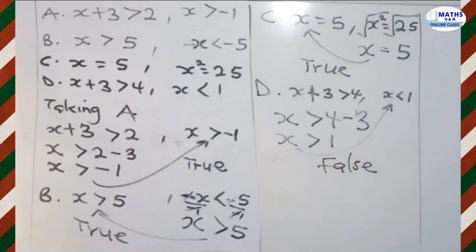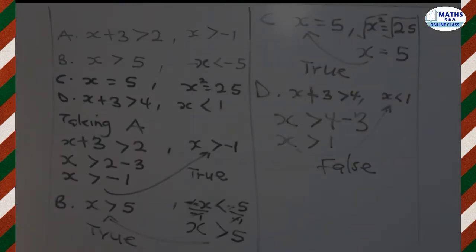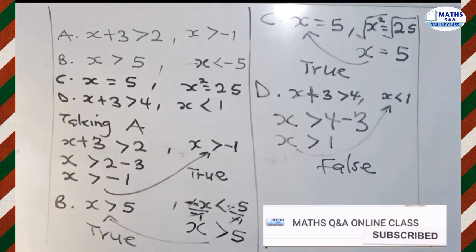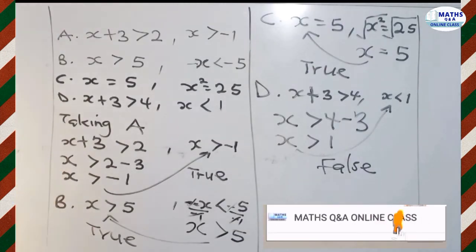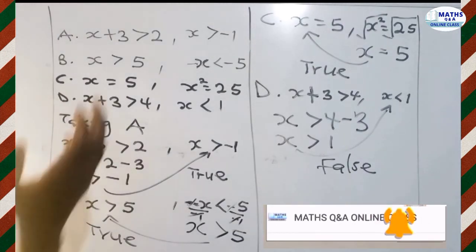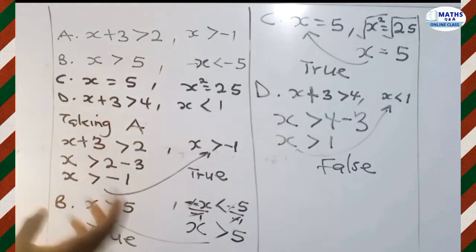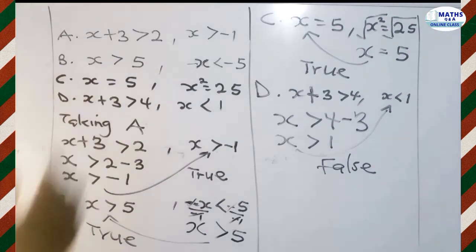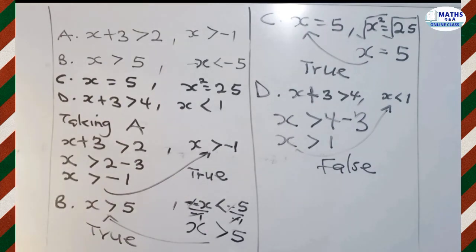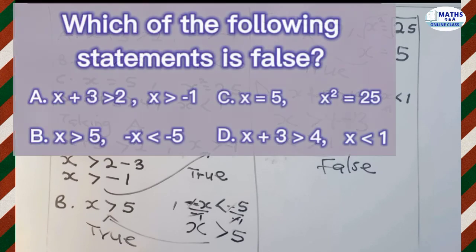So options A, B, and C are true statements, and option D is false. The correct answer is D.